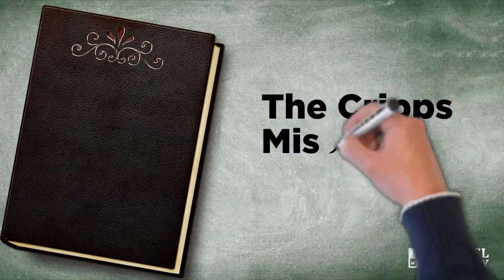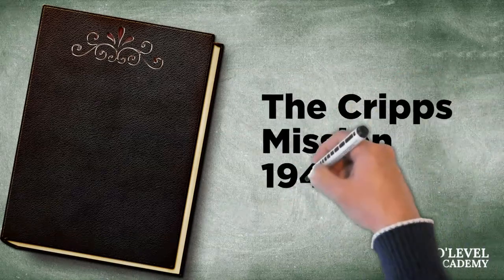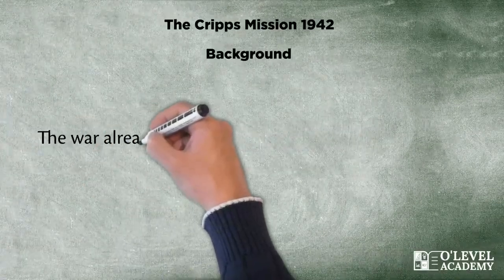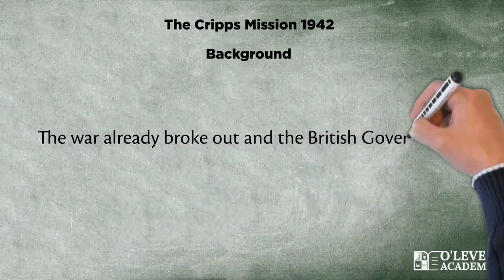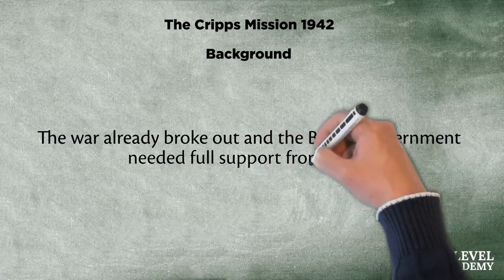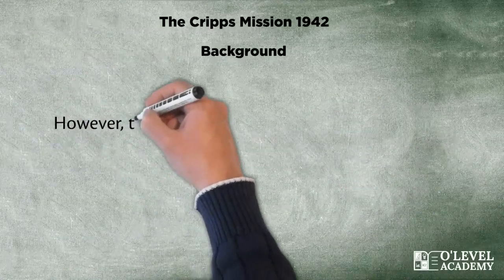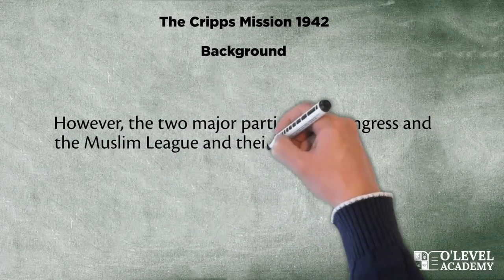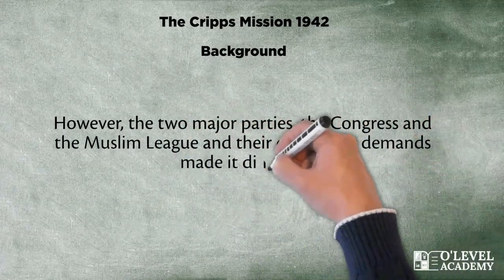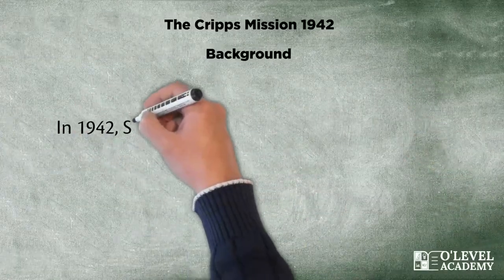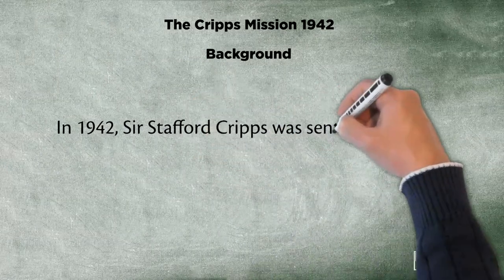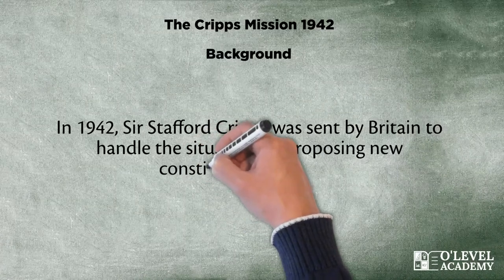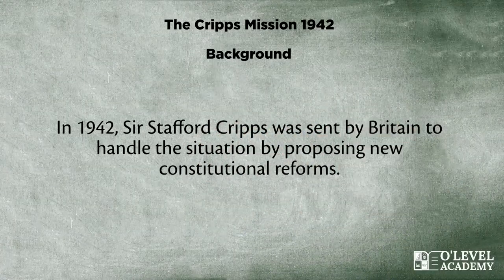The Cripps Mission, 1942. The war had already broken out and the British government needed full support from India. However, the two major parties, the Congress and the Muslim League, and their conflicting demands made it difficult. In 1942, Sir Stafford Cripps was sent by Britain to handle that situation by proposing new constitutional reforms.